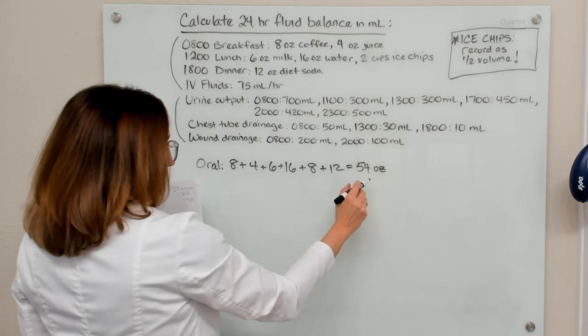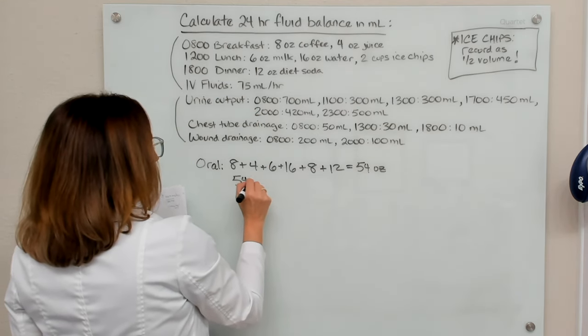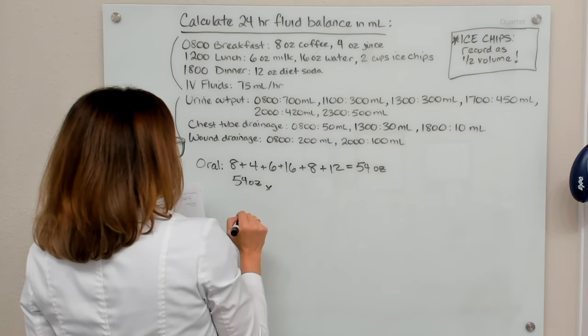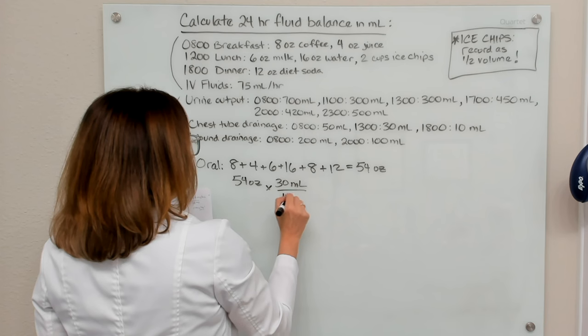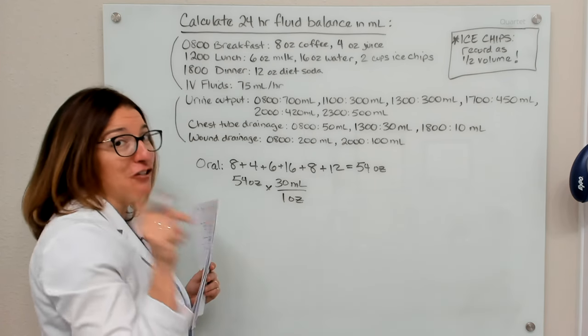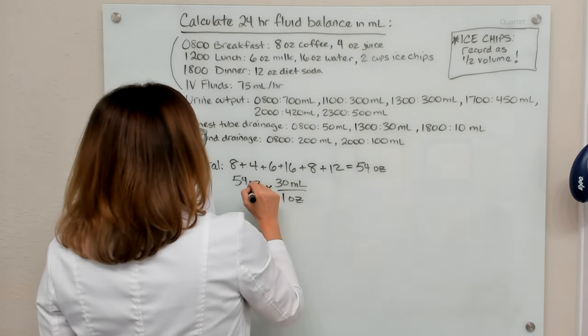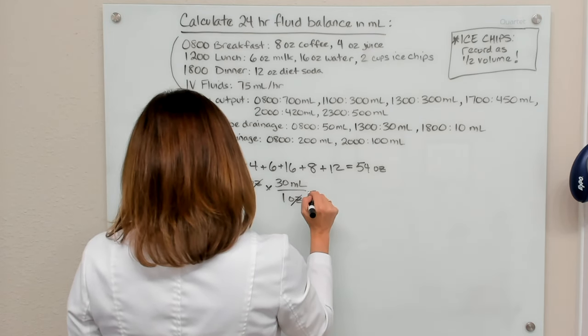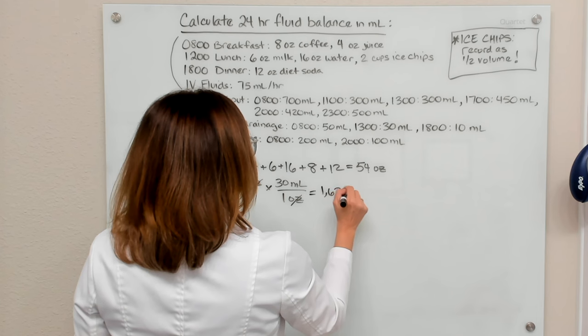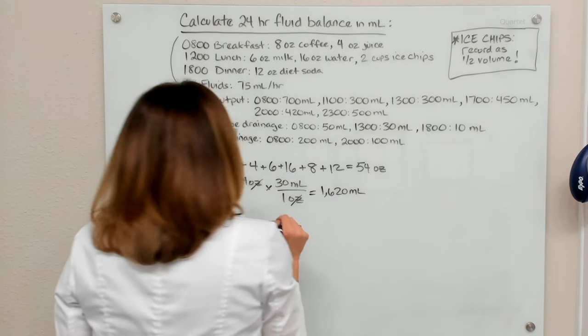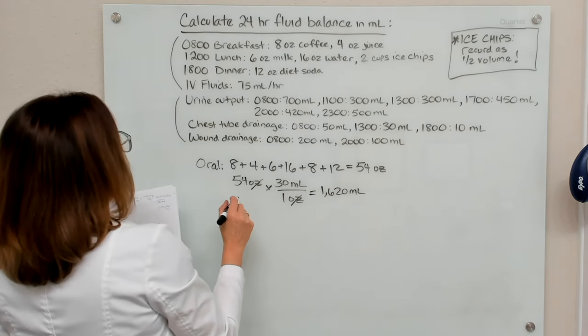But we need to take that 54 ounces and convert it into milliliters. So we know that 30 milliliters is in an ounce. That's a conversion you definitely have to remember. Our ounces will cross off here, and we'll multiply that out, and we end up with 1,620 milliliters.